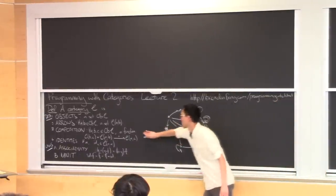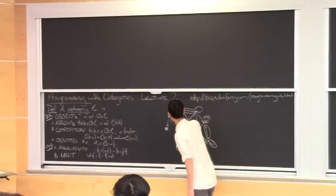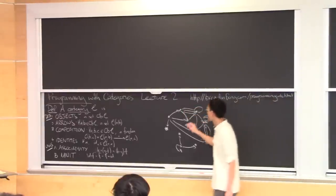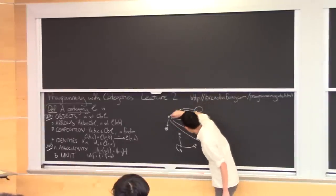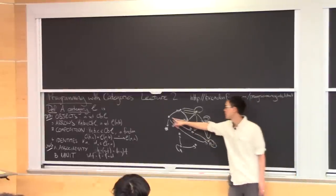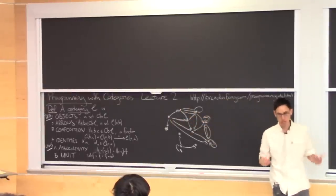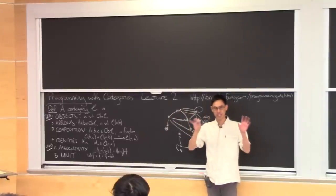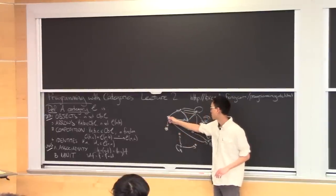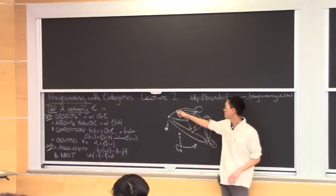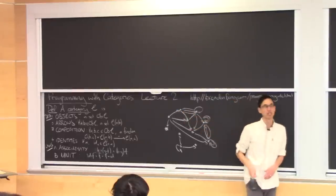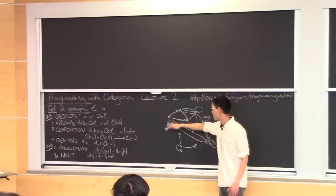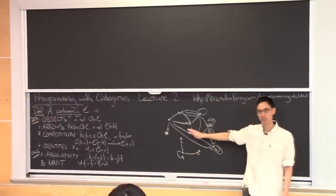What this says — what number three first says — is that if I take an arrow from A to B, and another arrow that starts at B and goes to some other thing C, that's the same as some arrow that goes directly from A to C, bypassing B. For example, if I have a program that accepts strings and splits them into a list of words, and another function that takes a list and tells me the number of elements in that list, then composing those programs is the same as writing a single program that just takes a string and tells me how many words are in it directly.